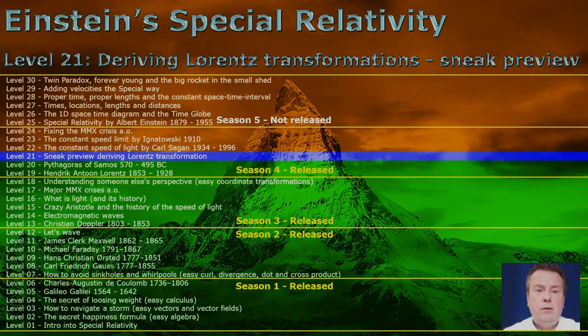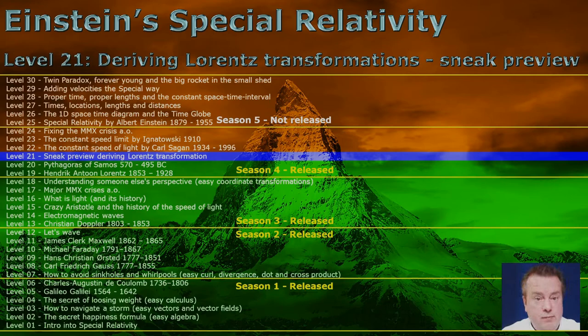Hi, my name is Tom and you are at level number 21 out of 30 easy steps to learn everything about Einstein's special relativity. This level is optional. As you may have seen in previous levels, I tend to have a section for everyone, then a section for daredevils, and then a section for rock climbers. In this case, this section is a daredevil-only piece of work.